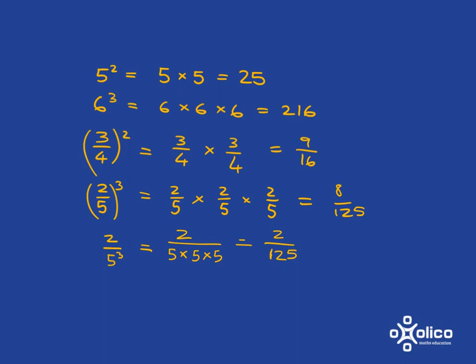And the only other small thing to note is if we've got a mixed number and we have to square or cube it, the easiest thing to do is simply to turn it into an improper fraction, and then do your squaring or cubing that you need to do.